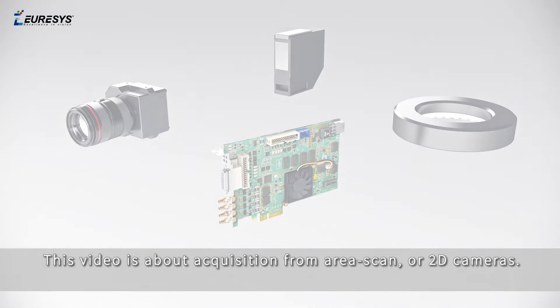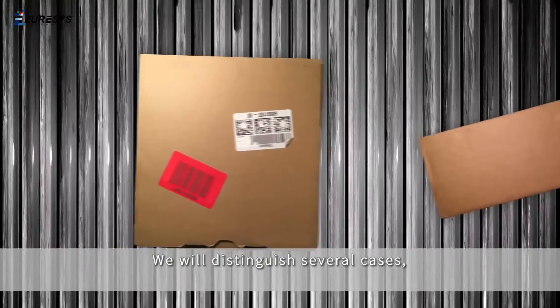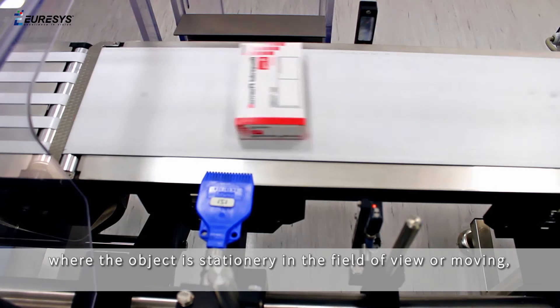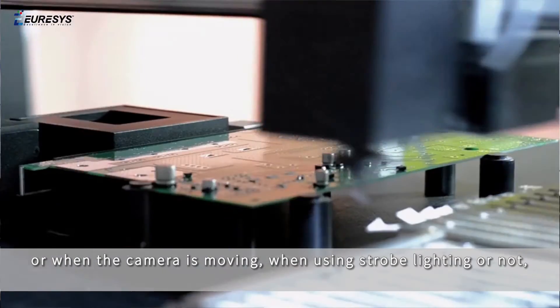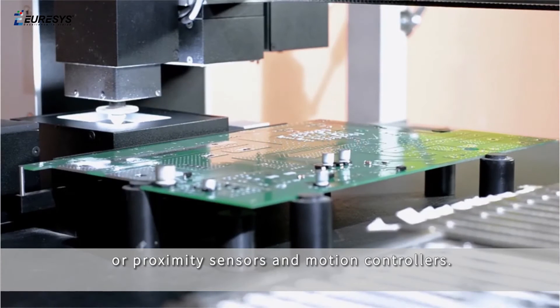This video is about acquisition from area scan or 2D cameras. We will distinguish several cases: where the object is stationary in the field of view or moving, or when the camera is moving, when using strobe lighting or not, or proximity sensors and motion controllers.